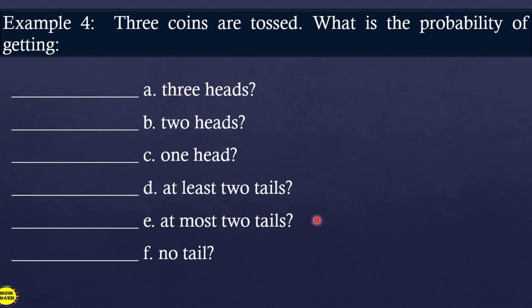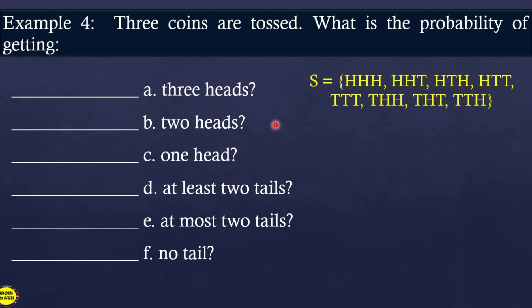Example 4: Three coins are tossed. To make solving easier, list out the sample space first. The sample space of 3 coins has 8 outcomes. What is the probability of getting 3 heads? Looking at the sample space, only 1 outcome has 3 heads (HHH). The sample space has 8 elements, so the probability = 1 over 8.